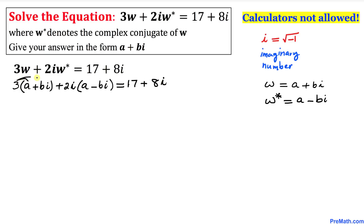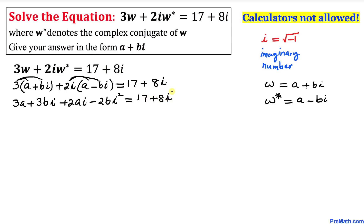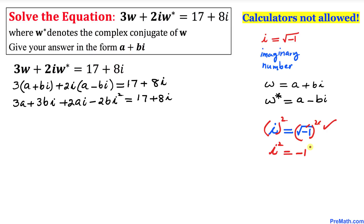Let's go ahead and distribute. This becomes 3a plus 3bi, plus distributing 2i gives us 2ai minus 2bi squared, equal to 17 plus 8i. Now let's recall that i equals the square root of negative 1. Squaring both sides, the square and square root undo each other, so i squared turns out to be negative 1. Wherever we see i squared, we replace it by negative 1.